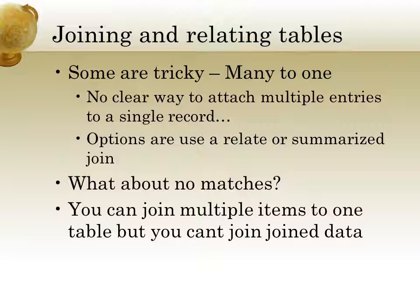Other things that are tricky: you can join multiple items to one table, but you can't join joined data. Say you have three data sets and you want to join information from one to another — you could do that. You could then take that information you just joined and join it to another different data set. But you can't join data to a table and then join more data to that same table. You can join from one table to multiple different things, but you can't join onto joined data.